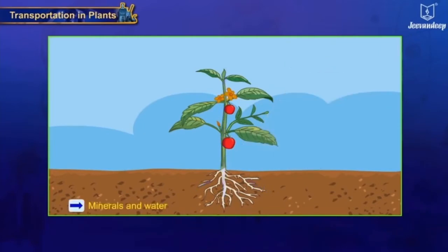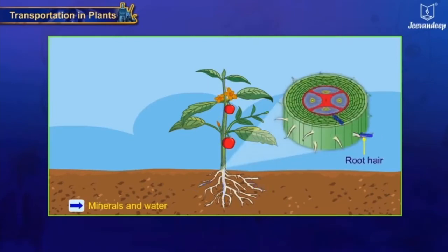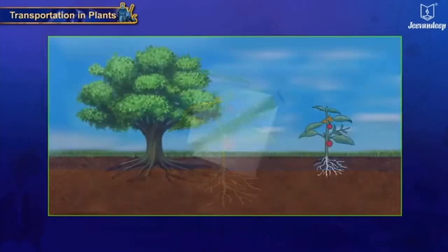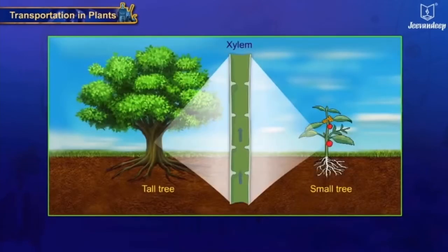Minerals are absorbed from the soil by the cells of the root hair mostly through active transport, i.e., absorption of minerals against the concentration gradient with the expenditure of energy. This continuous movement of water from the soil to the xylem tissue creates root pressure, which can push water upward.